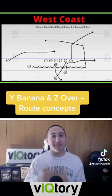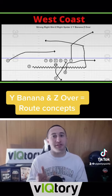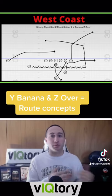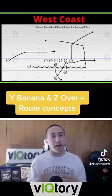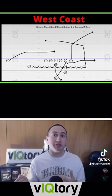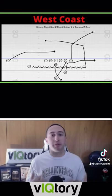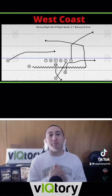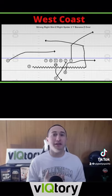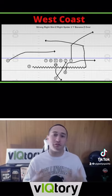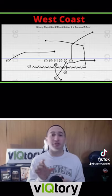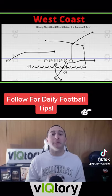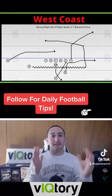'Y banana' is the Y receiver running a banana route. 'Z over' is what the Z receiver's route is going to be after he finishes his motion, and then everyone else is executing their built-in play rules. It may seem long and complicated, but coaches do this for flexibility — they can change anything within the play call to make it exactly how they want.